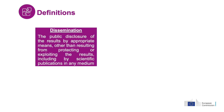Let's see what exactly we mean by dissemination, exploitation and communication. Horizon Europe defines dissemination as the public disclosure of the results by appropriate means other than resulting from protecting or exploiting the results, including by scientific publications in any medium. In other words, with dissemination, we want the beneficiaries to bring their project results to the attention of targeted communities that could further utilize them.